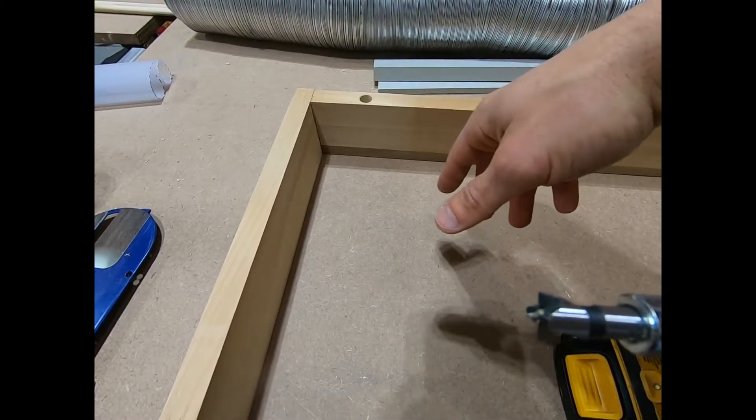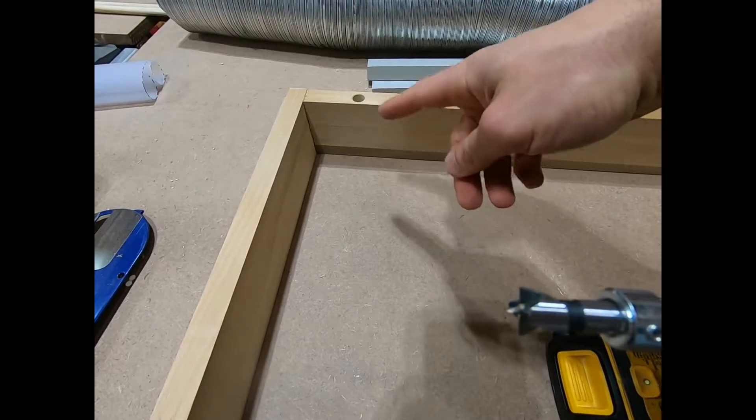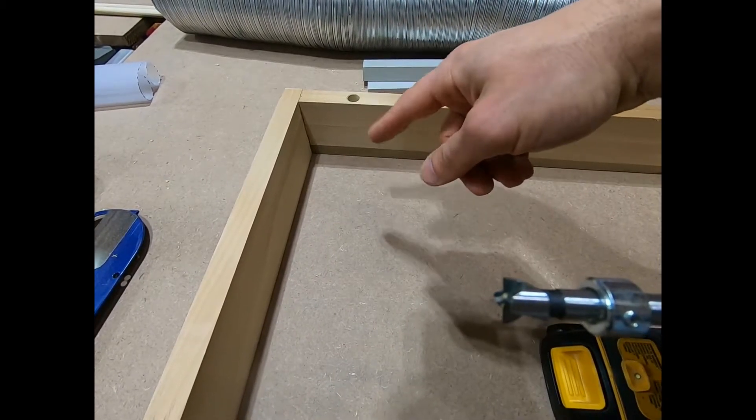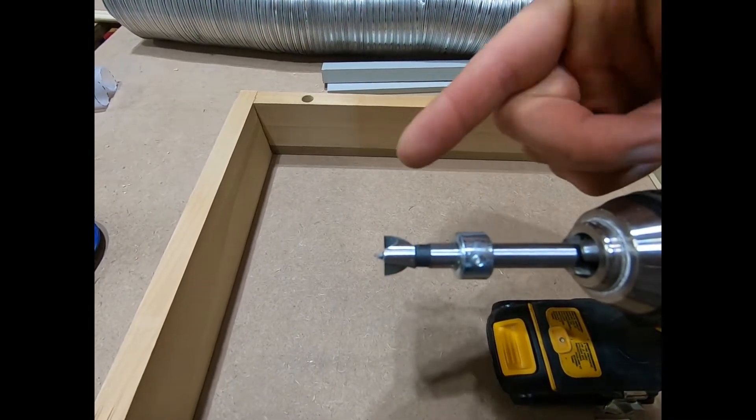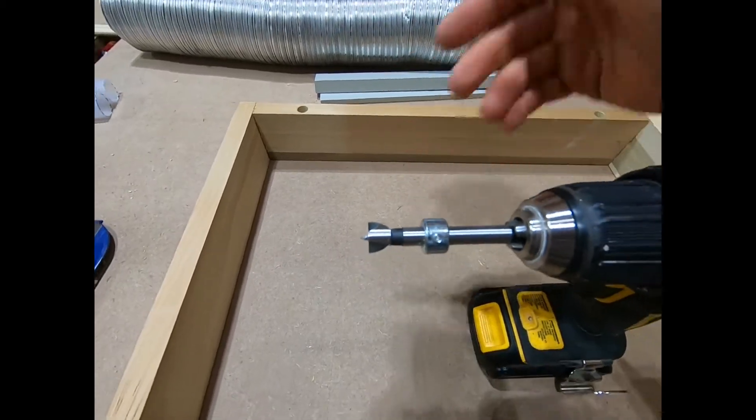I forgot to mention, I am pretty sure you have figured it out. I am using half inch dowels, like I said before, so I am using a half inch fastener bit. But just in case you are wondering.